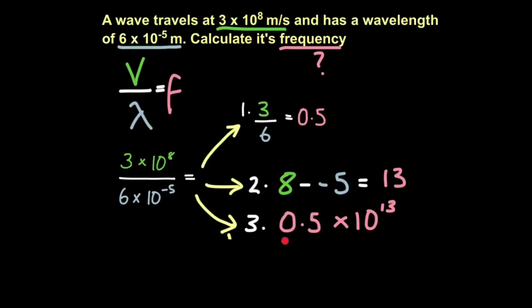And then combine together. So 0.5 times 10 to the 13. But you may have spotted we can't have 0.5. It must be in terms of 5. So we move the decimal point forward 1 to give us 5. And as a result, we subtract 1 power.